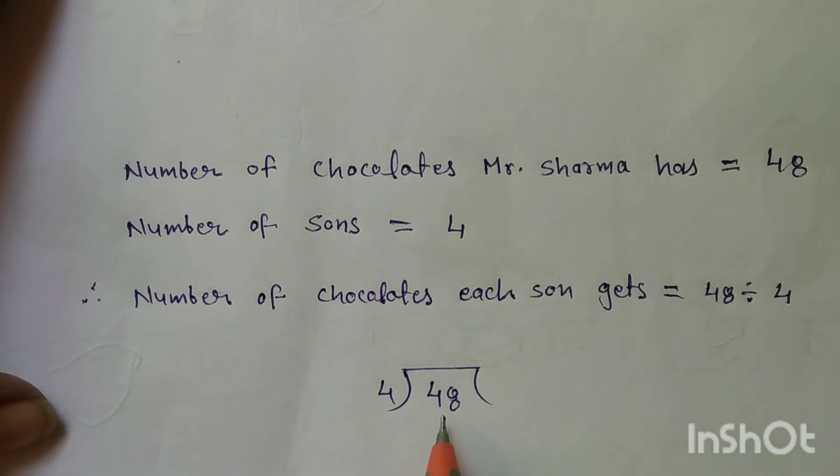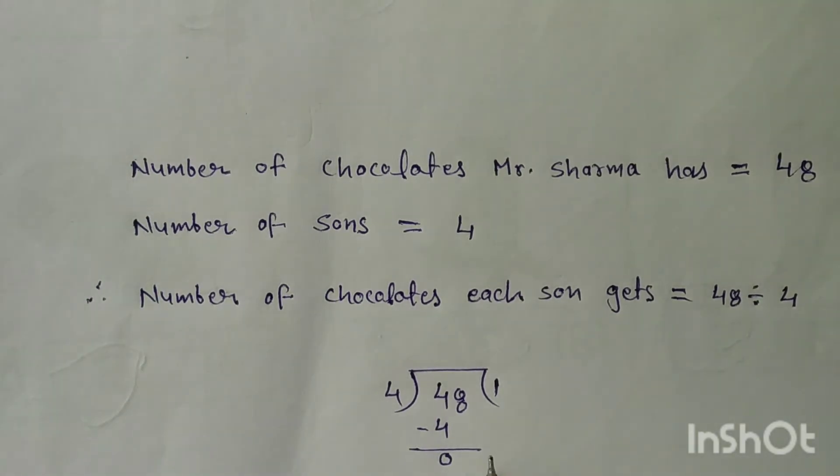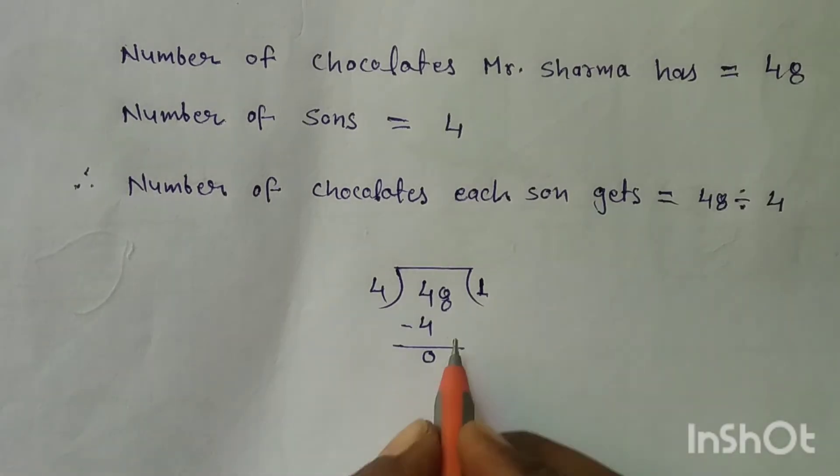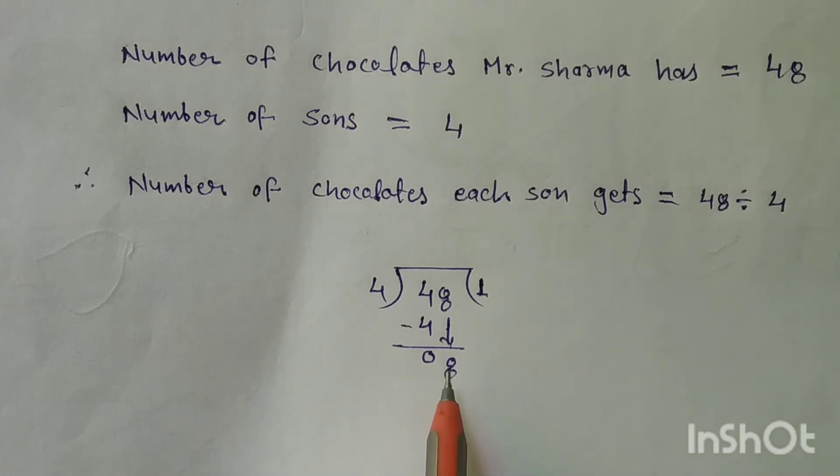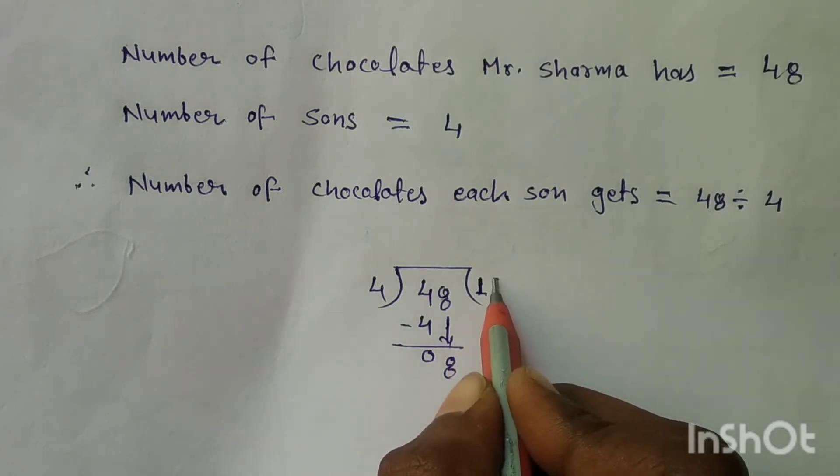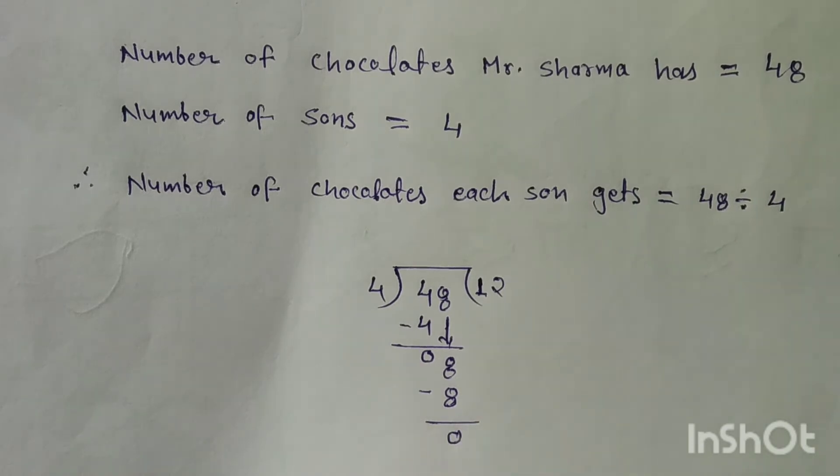48 divided by 4. 4 into 4 is 1, minus 4 is 0. Bring down 8 and divide 8 by 4. 4 times 1 is 4, 4 times 2 is 8. Minus 8 is equal to 0.